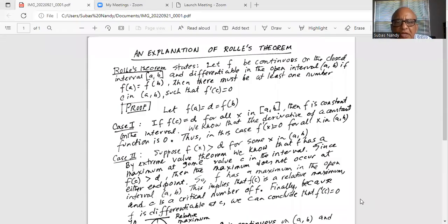An explanation of Rolle's theorem. Rolle's theorem states: let f be continuous on the closed interval [a, b] and differentiable in the open interval (a, b). Notice the different parenthesis. If f(a) is equal to f(b), then there must be at least one number c in the open interval such that f prime of c equals 0.